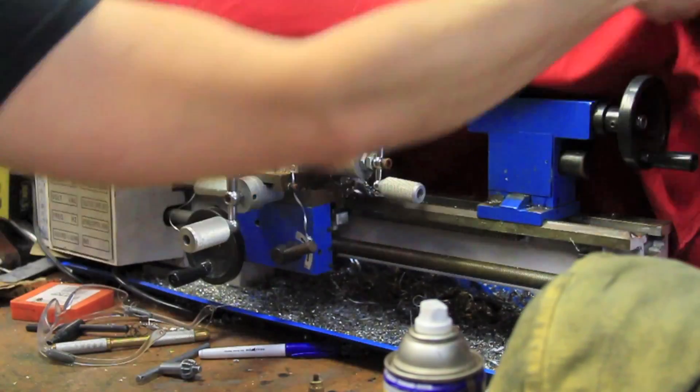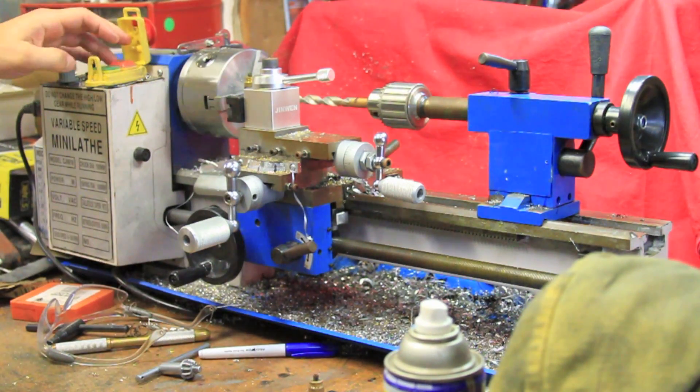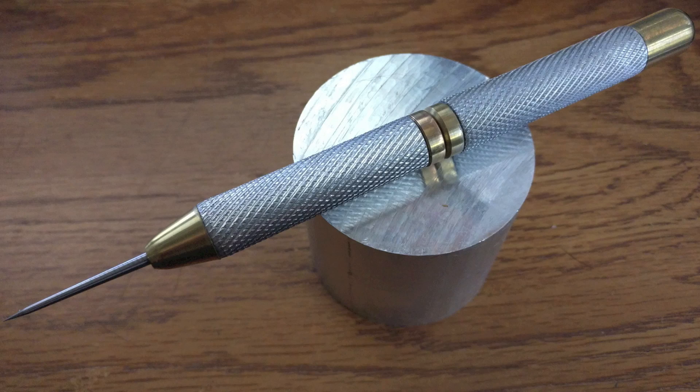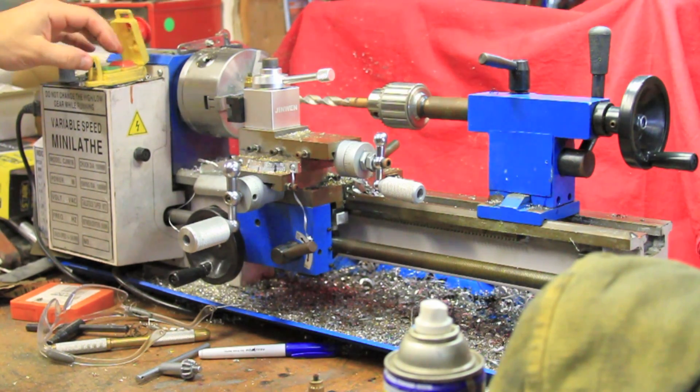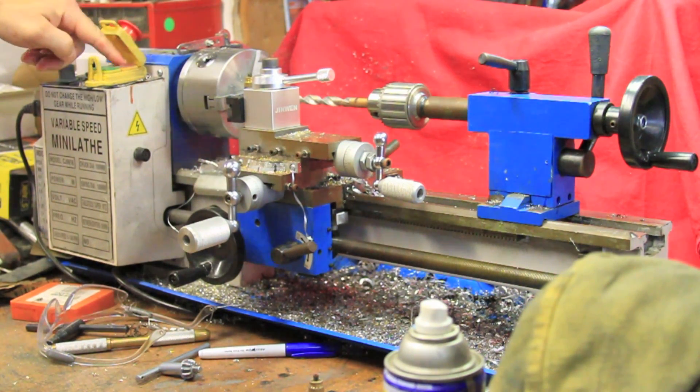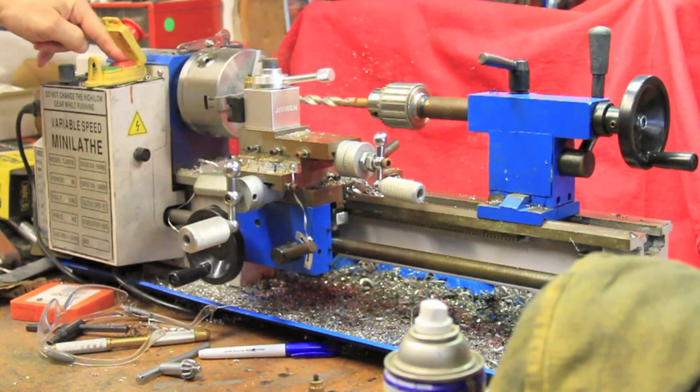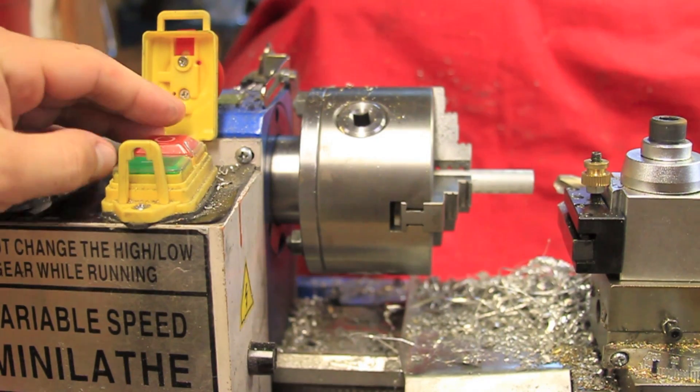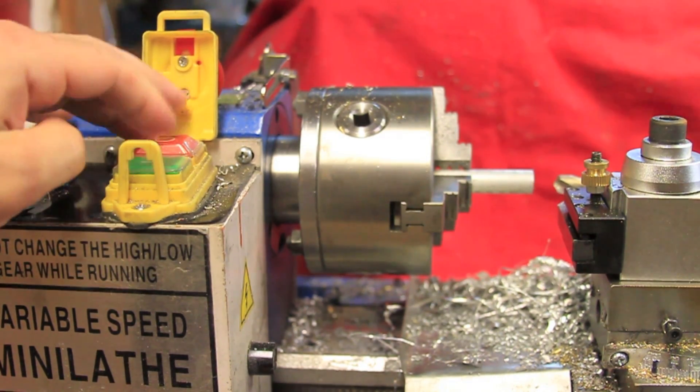While I was making another copy of the Retractable Scribe project to fill an Etsy sale, linked below if anyone else is interested, I blew another fuse. At this point it became apparent that this is something that tends to happen on these lathes and can be pretty inconvenient, so I decided to get rid of them for good.